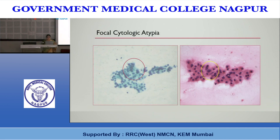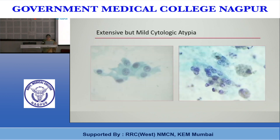Focal cytologic atypia can be seen in an adequate but paucicellular or cellular specimen. Other features of PTC like pseudoinclusions and grooves are not seen. In another situation — extensive but mild cytologic atypia — many or most cells show mildly enlarged nuclei, slightly pale chromatin, and only limited nuclear contour irregularity; grooves and nuclear pseudoinclusions are still absent, keeping you uncertain whether you are dealing with a non-representative aspirate from papillary thyroid carcinoma.